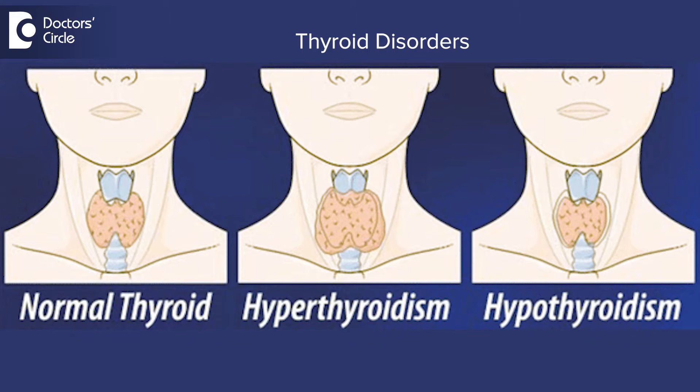So if you are having hypothyroidism or hyperthyroidism — hypothyroidism means when the TSH levels are high, and hyperthyroidism is when the TSH levels are very low or undetected — then you should have your TSH, T3, and T4 levels controlled with medication before you plan for pregnancy.